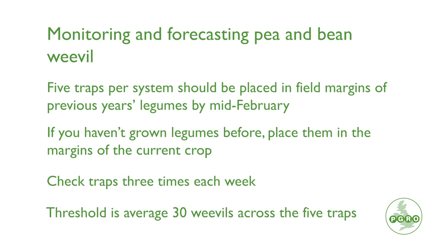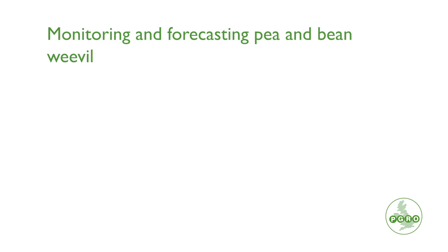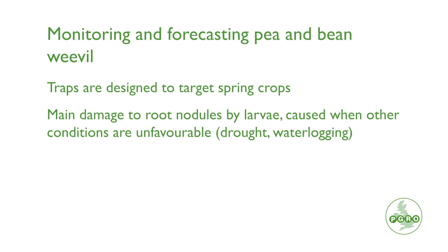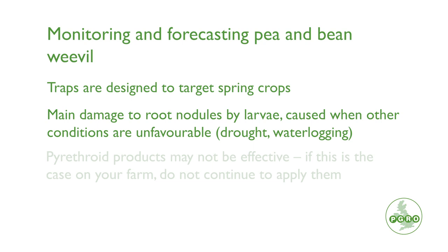Once you've reached that threshold, you need to determine whether the crop has emerged in the last 10 days or whether it's likely to emerge in the next 10 days. So what that means is you're really targeting the spring crops, not the autumn sown crops. Winter beans will be well established by the time that you put these traps out and shouldn't need any management of pea and bean weevil. The main damage is not caused by the foliar damage that we see, but the movement of the larvae into the root nodules, which can cause yield effects — but really only in conjunction with other stress factors in peas and beans. So if you have a period of drought following emergence or you have compacted soils, that's when you're most likely to see yield damage from pea and bean weevil.